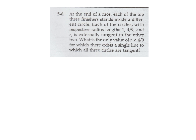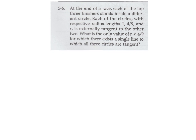At the end of a race, each of the top three finishers stands inside a different circle. Each of the circles with respective radius lengths 1, 4 over 9, and r is externally tangent to the other two. What is the only value of r less than 4 over 9 for which there exists a single line to which all three circles are tangent? Let's draw this: first a line, then three circles of different sizes all tangent to it.